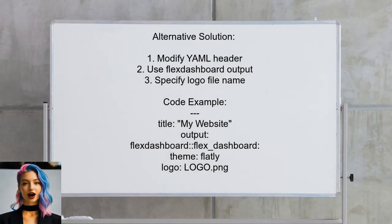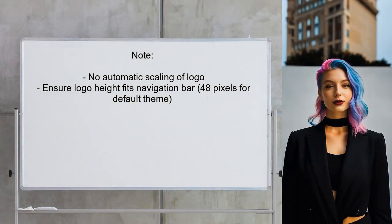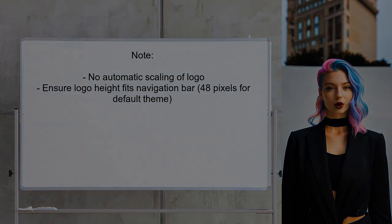Another alternative solution involves modifying the YAML header for your R Markdown document. If you're using Flex Dashboard, you can specify the logo directly in the output section — just include the logo file name in the YAML header. It's important to note that the logo image will not be scaled automatically, so make sure it fits the navigation bar's height, which is typically 48 pixels for the default theme.